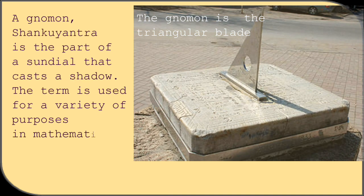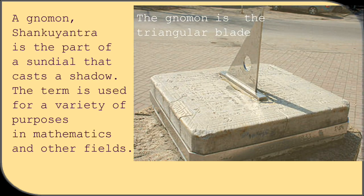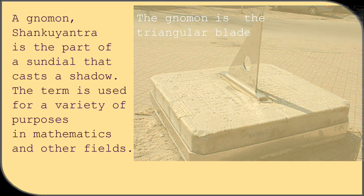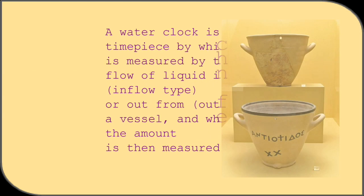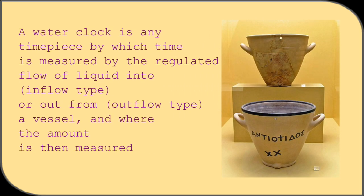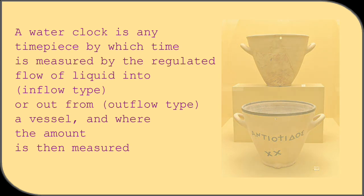A gnomon or shankuyantra is the part of a sundial that casts a shadow. The term is used for a variety of purposes in mathematics and other fields. A water clock is any timepiece by which time is measured by the regulated flow of liquid into or out from a vessel where the amount is then measured.